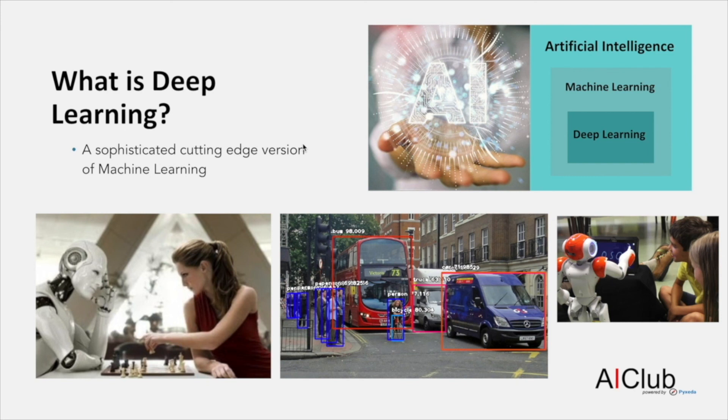So what have we learned by watching this video? We have learned that there are several different types of AI, and they all need data to learn patterns from. We learned an important new word called machine learning, which refers to the mechanism of learning from data. Thank you.